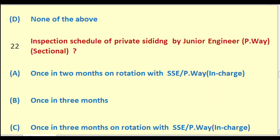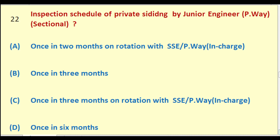Inspection schedule of private siding by Junior Engineer Permanent Way Sectional: once in two months on rotation with SSE PW in charge; once in three months; once in three months on rotation with SSE PW in charge; once in six months. The right answer is: once in three months.